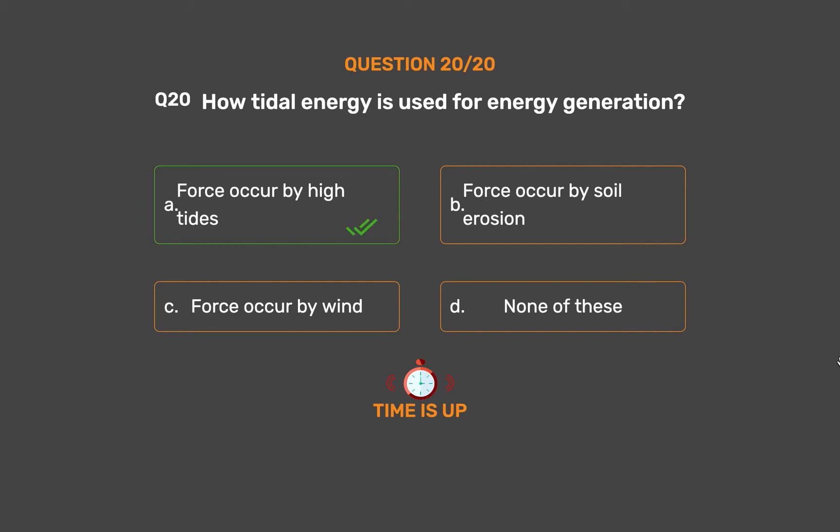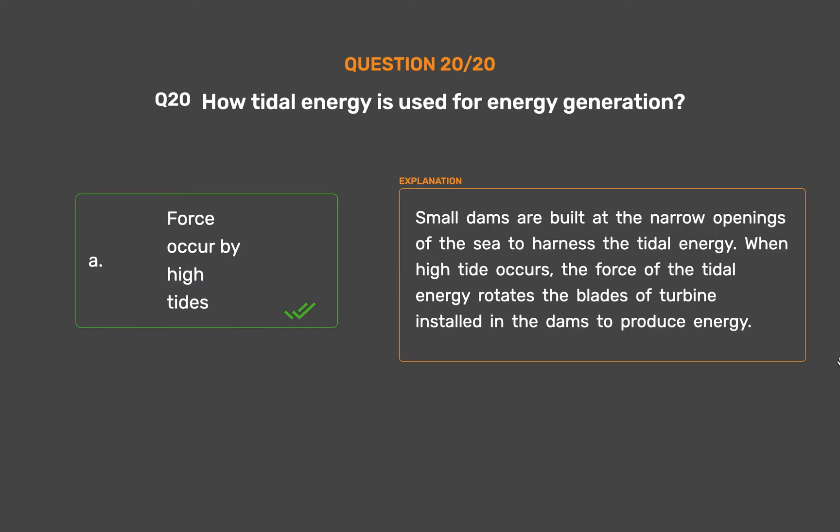The correct answer is Option A: Force occurring by high tides. Small dams are built at the narrow openings of the sea to harness tidal energy. When high tide occurs, the force of the tidal energy rotates the blades of a turbine installed in the dams to produce energy.